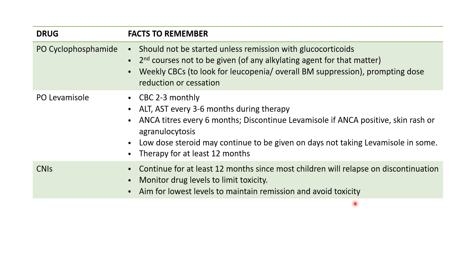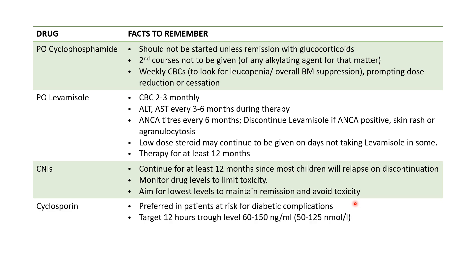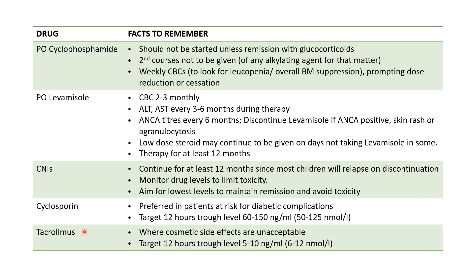The two commonly used calcineurin inhibitors are cyclosporine and tacrolimus. Monitor levels initially every three weeks, then every 1–1.5 months. If clinical and laboratory response is absent or levels are rising, consider discontinuation or switching therapy; also discontinue for any side effect. The most common CNI side effect is nephrotoxicity. Cyclosporine is preferred in patients at risk for diabetic complications — target 12-hour trough level: 60–150 ng/mL or 50–125 nmol/L. Tacrolimus is preferred where cosmetic side effects are unacceptable — target 12-hour trough: 5–10 ng/mL or 6–12 nmol/L.